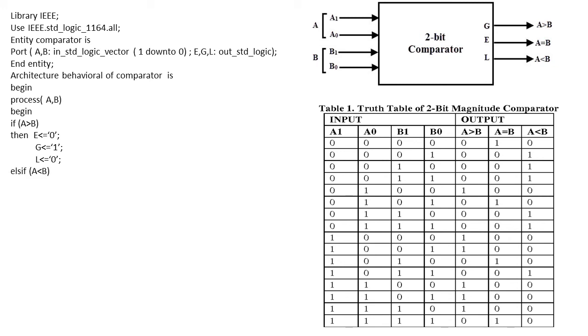If this condition is not satisfied, we write the second elsif to check if A is less than B. If A is less than B, put equal as 0, greater as 0, and less as 1.